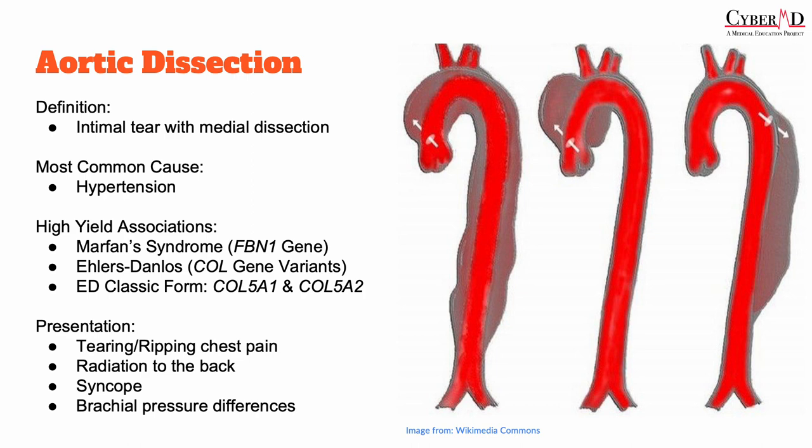Let's discuss our first pathology, aortic dissection. Aortic dissection occurs when there is a tear through the intima as the blood dissects into the media of the aortic wall. When this does occur, it is often within the first 10 centimeters of the aorta, as this particular region incurs large amounts of stress, holding the highest blood pressures.